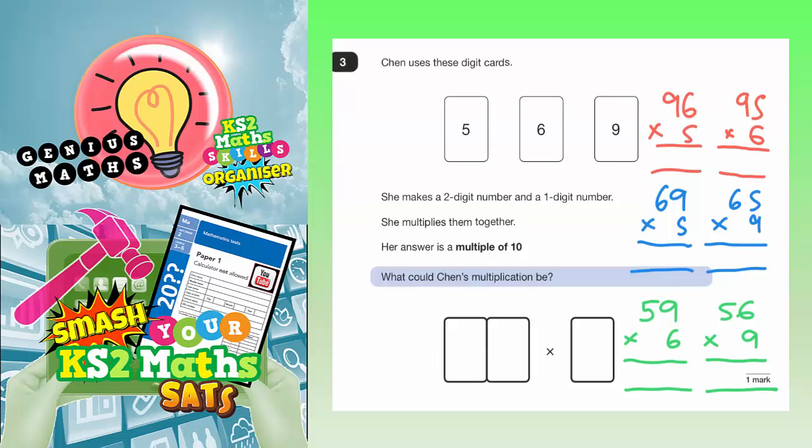Well, what I've done is I've written out all 6 combinations of these numbers with a 2 digit number times by a 1 digit number. So we could have, if we begin with the 9, we could have 96 times 5 or 95 times 6. If we begin with the 6, we could have 69 times 5 or 65 times 9. And if we begin with the 5, we could have 59 times 6 or 56 times 9. They're the only 6 combinations that we can have.